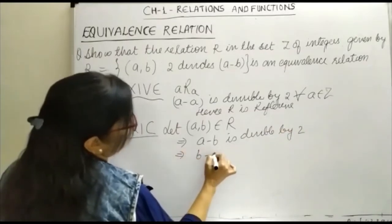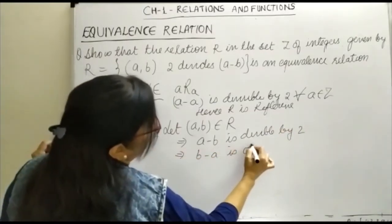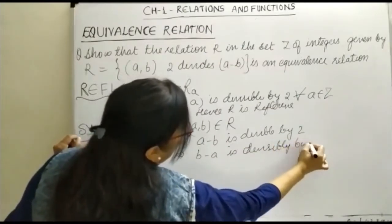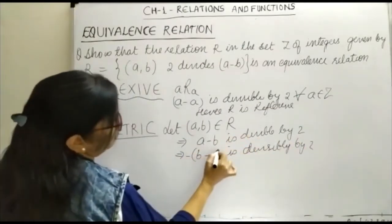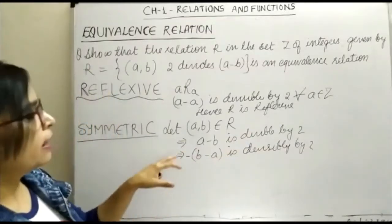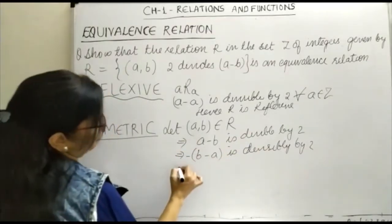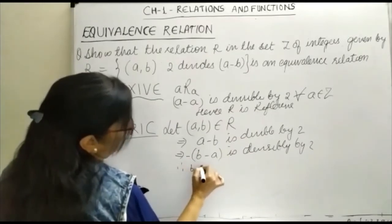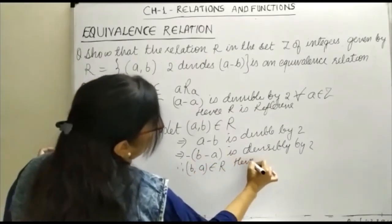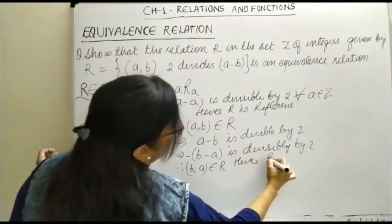Then this implies B minus A is divisible by 2. You can take minus here, and A minus B can be written in this form, and it is divisible by 2. Therefore, (b,a) belongs to R and hence R is symmetric.